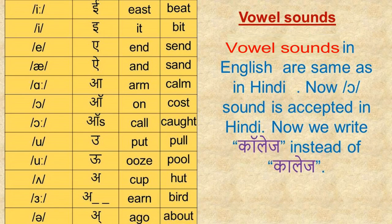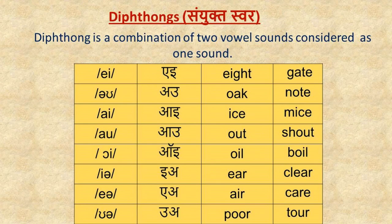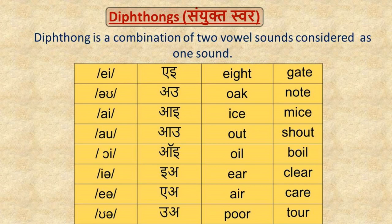Most of the vowel sounds in English are the same as in Hindi. Now the 'all' sound is also accepted in Hindi — we now write 'college' instead of an older spelling. Of those 20 vowel sounds, 12 are pure vowel sounds and 8 are diphthongs (sanyukta swar).